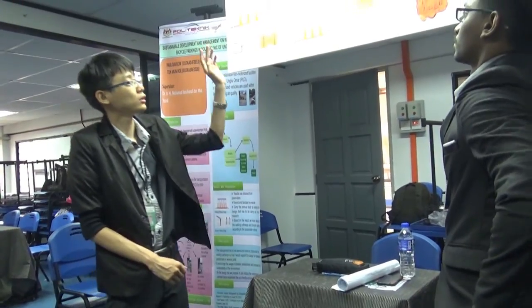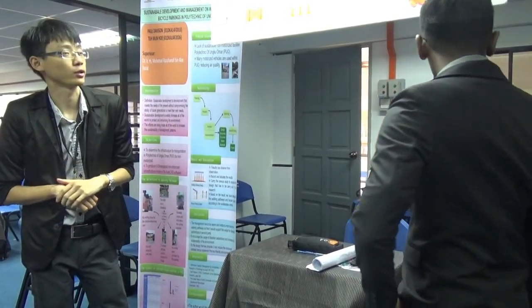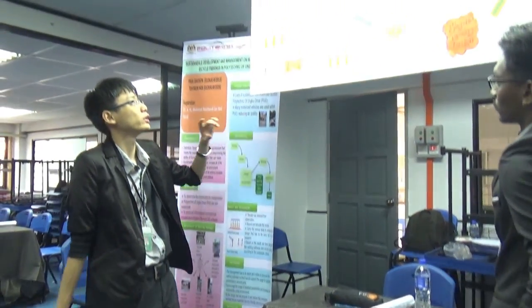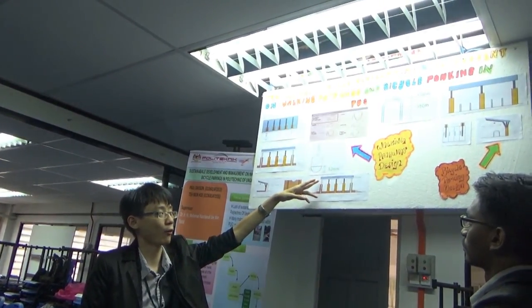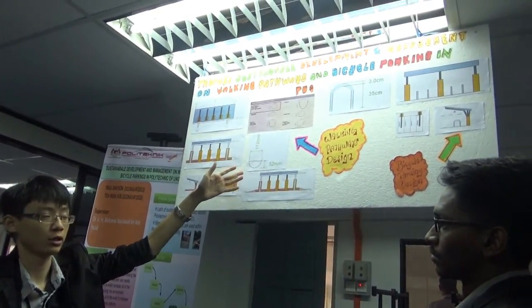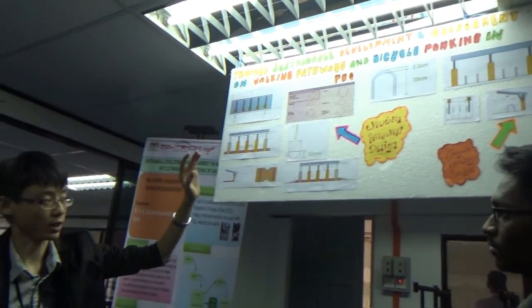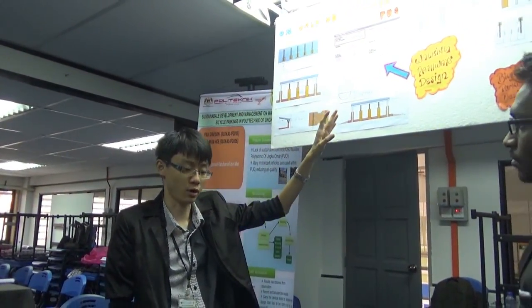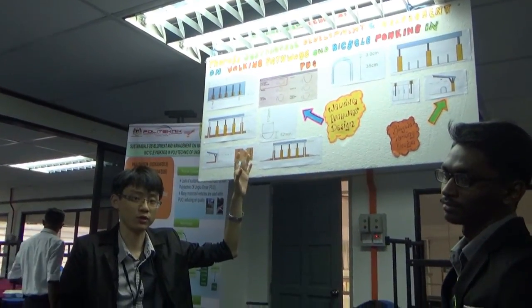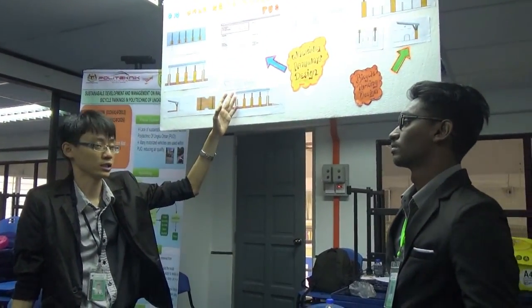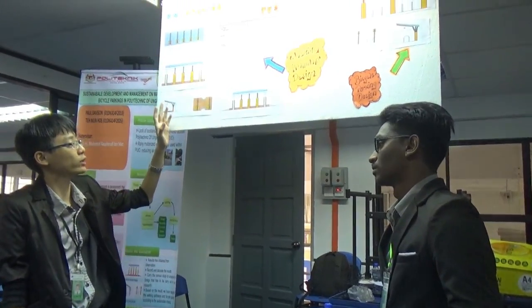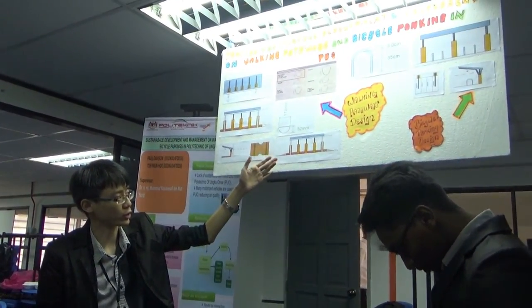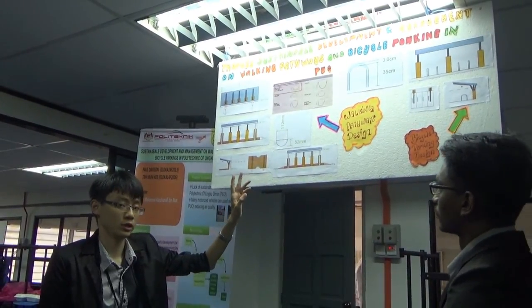The non-motorized facilities we focused on are walking parkway and bicycle parking. We have three suggestions for the walking parkway. The first is to replace the aluminium awning with zinc.